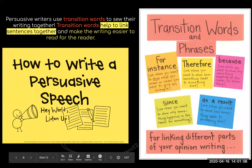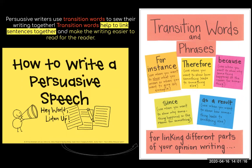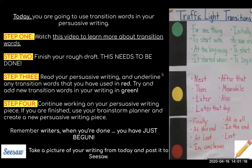For writing, you are going to look at transition words. Here are a couple of examples: for instance, therefore, because, since, and as a result. You're then going to watch a video about more transition words. If you have not finished, you need to finish your rough draft and submit it to Seesaw — this is very important as I have nothing to mark you from. You're going to read your persuasive writing, underline any transition words you've used, and try to add new transition words in green.